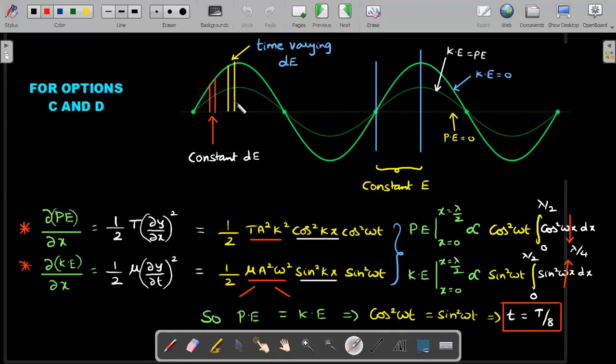To emphasize further: if you take another dx window anywhere else other than the middle of node and antinode, then this dE will vary with time. Its dPE varies with time, dKE varies with time, and the sum dE also varies. Please understand: every small window in standing waves, the energy won't be stationary.